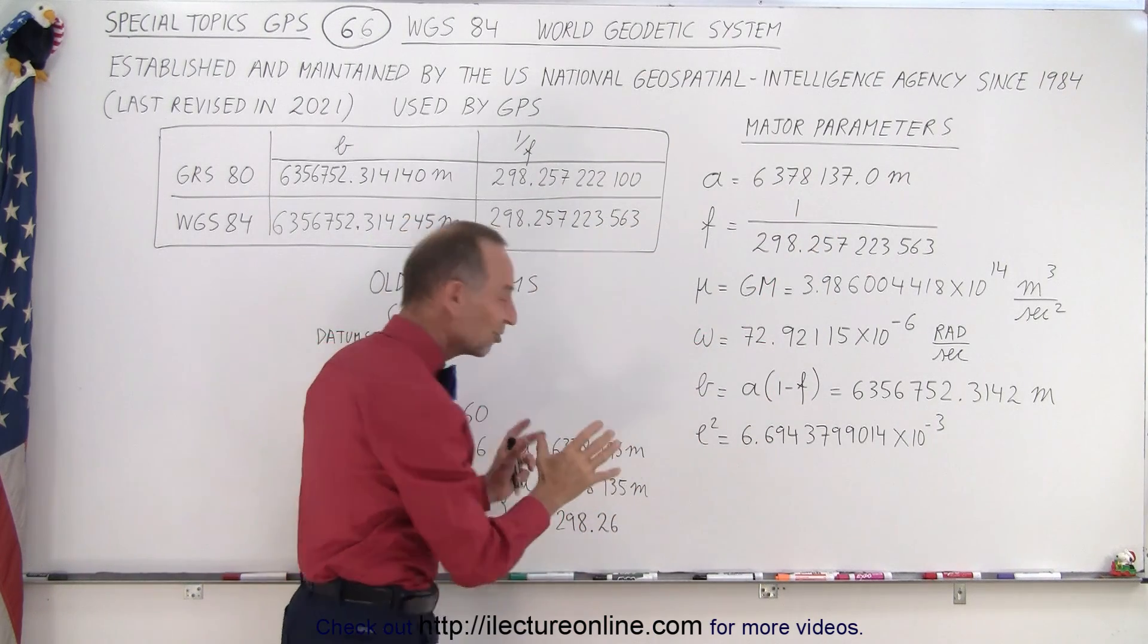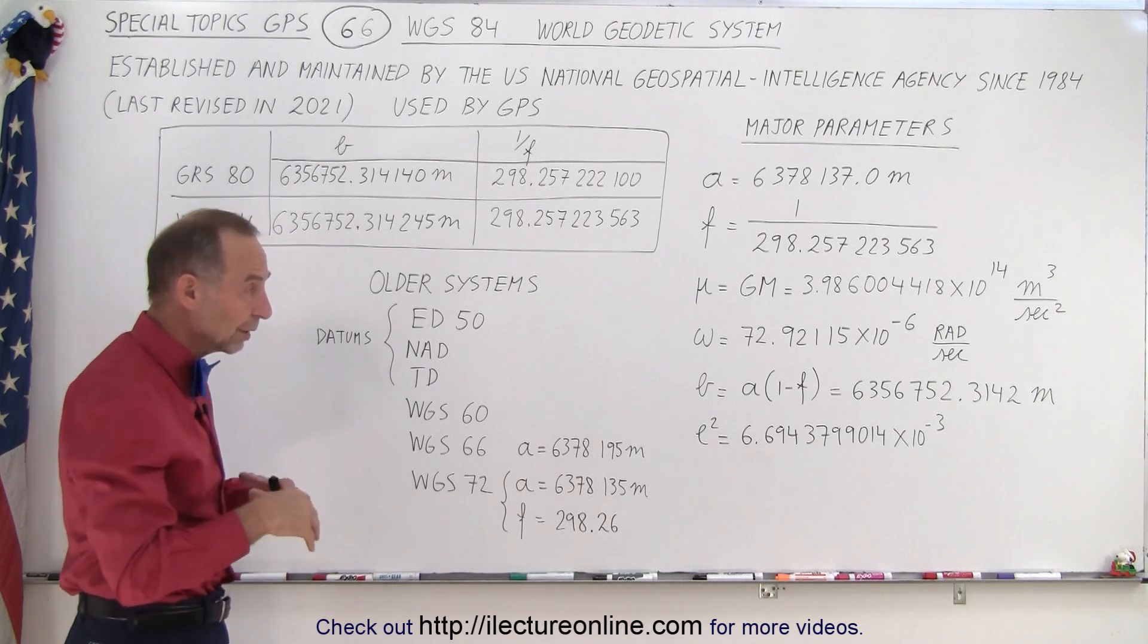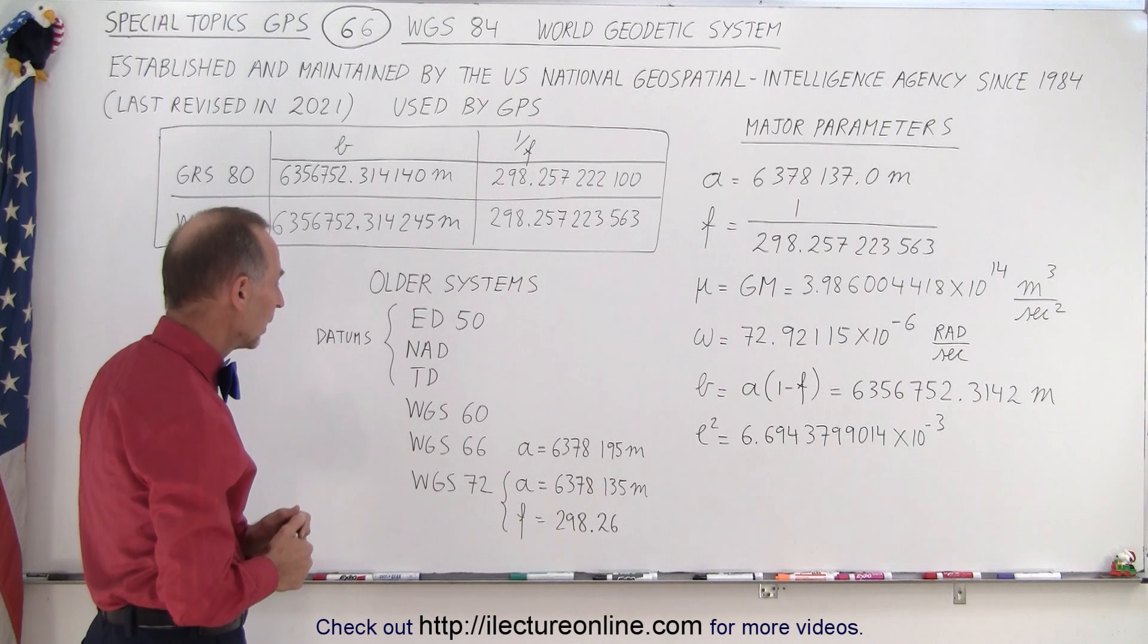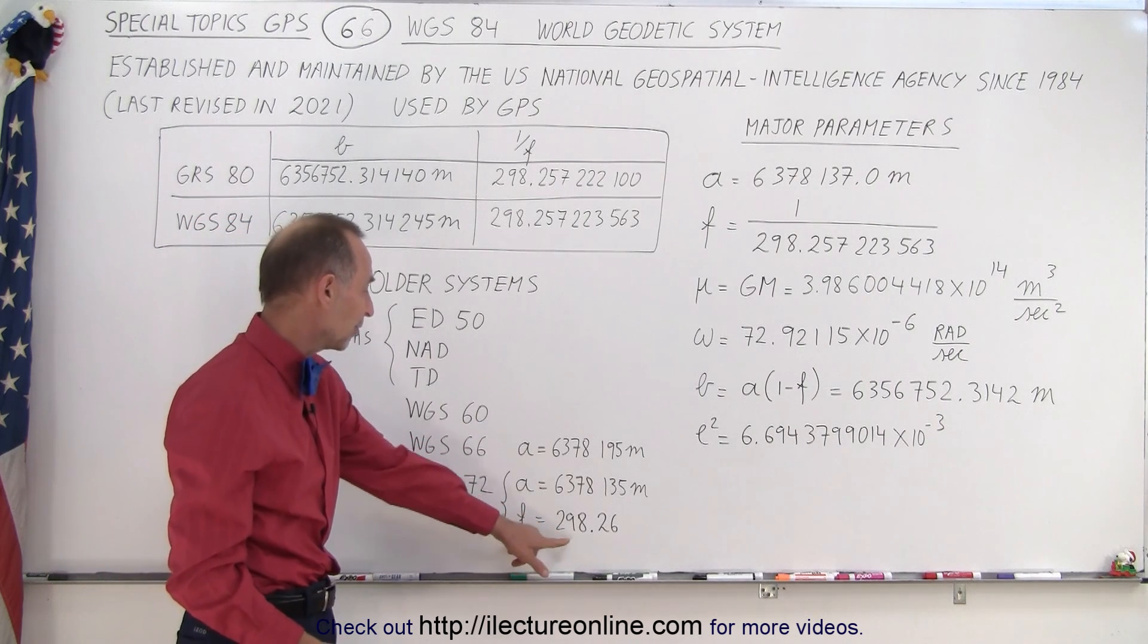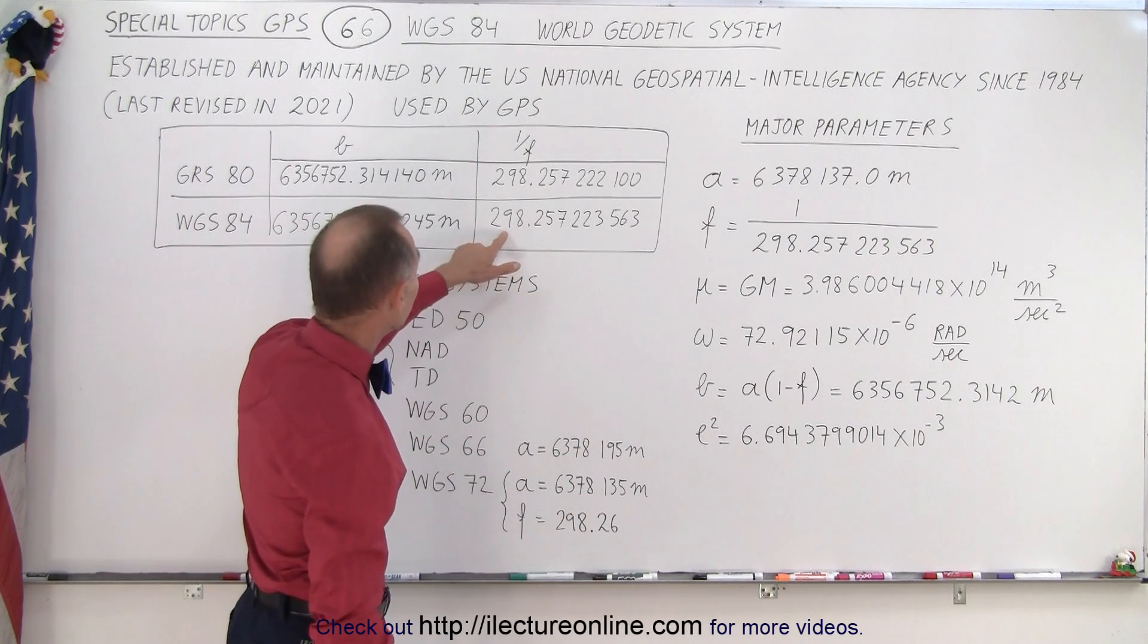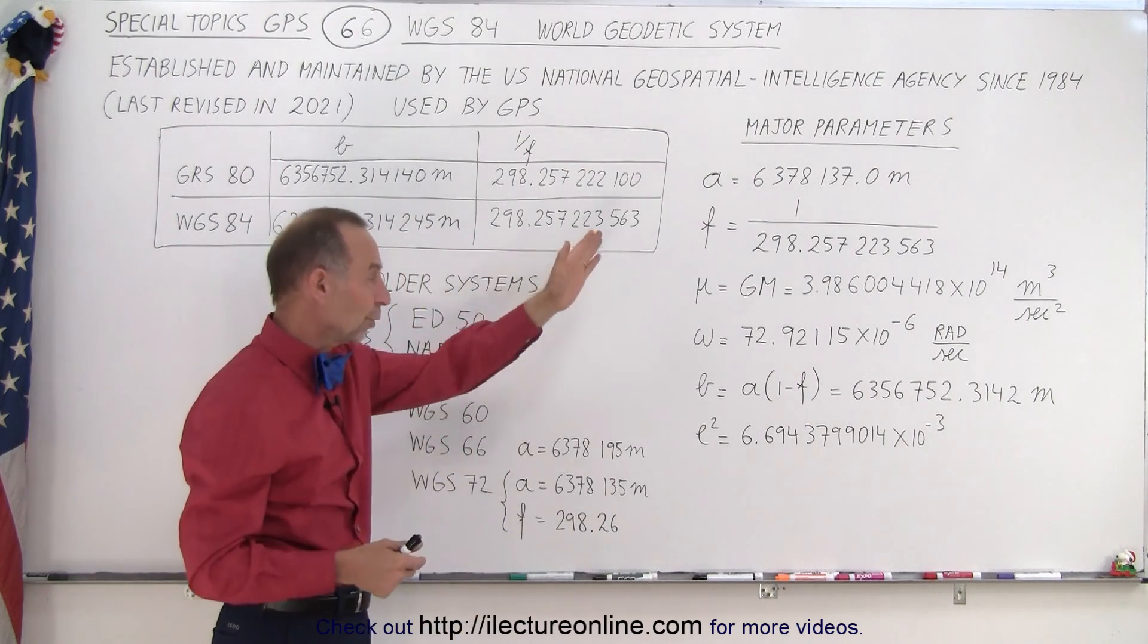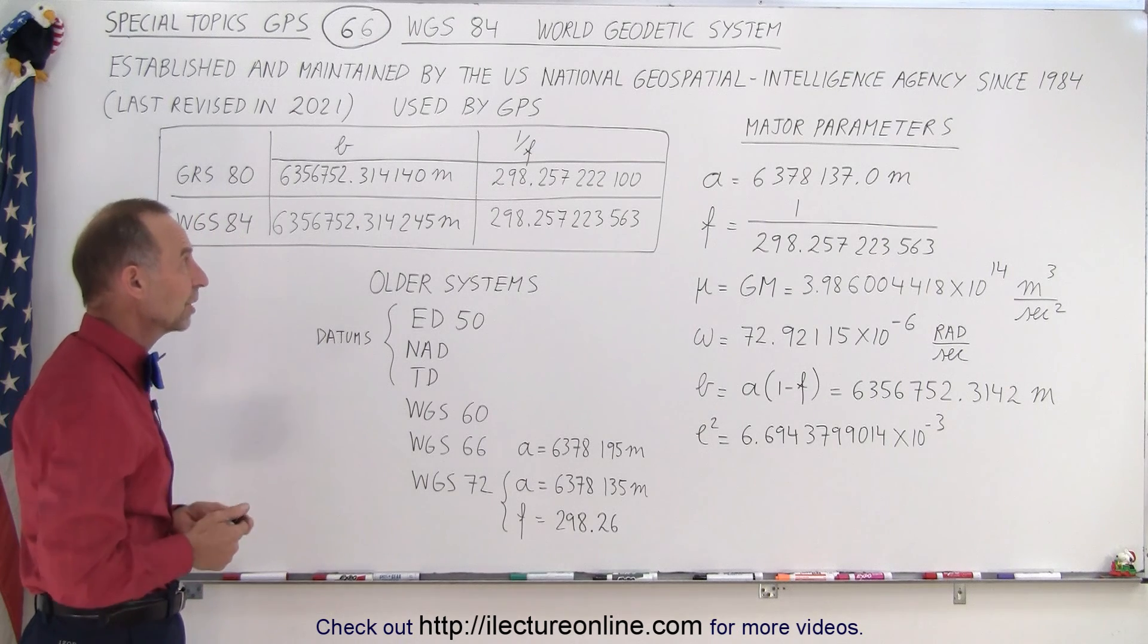So you can see that we have now established about as accurate as we can get it, although if we can, we'll still continue to refine it in the future. But notice that these parameters have changed a little bit. Here we have F of 2, the flattening at 298.26. Now we're currently at 298.257, and of course a whole lot more decimal places after that. So we have some very accurate numbers today.